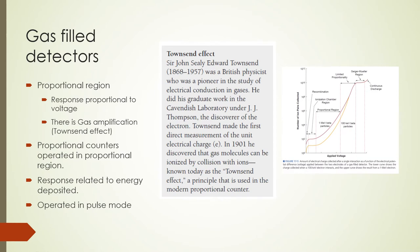The next region after the ion chamber region is the proportional region. As the voltage is increased past the ion chamber region, the response begins to increase with voltage, and we enter the proportional region — the nearly straight-line region where response is proportional to both the voltage and to the energy deposited. In this region, ions have enough energy to cause additional ionizations in a phenomenon called gas amplification or the Townsend effect. The amount of amplification increases as the voltage is increased. Proportional counters are usually operated in the proportional region in pulse mode and can be used as counters or spectrometers.